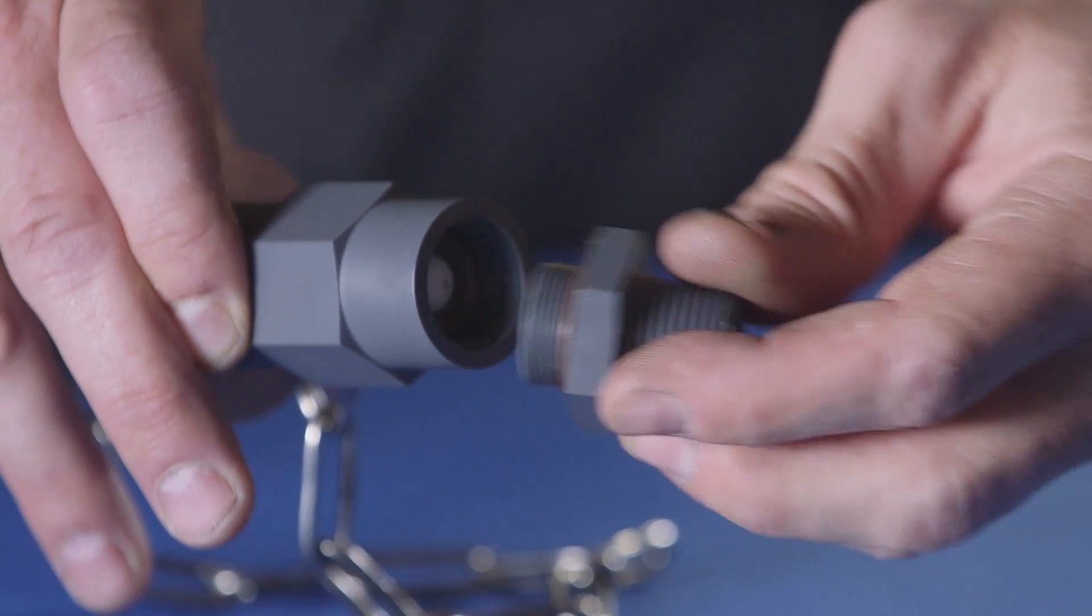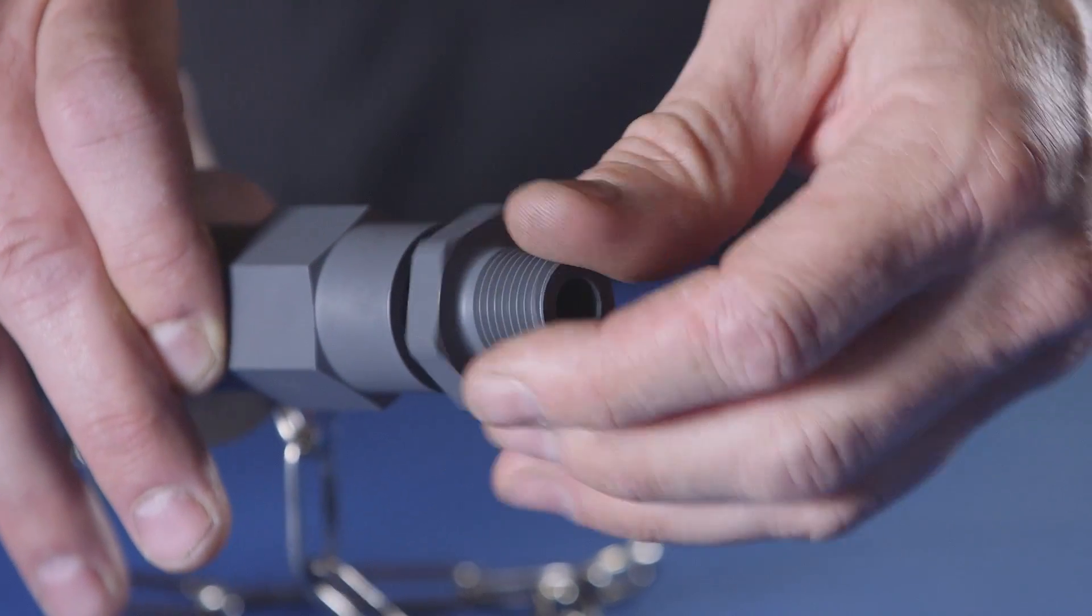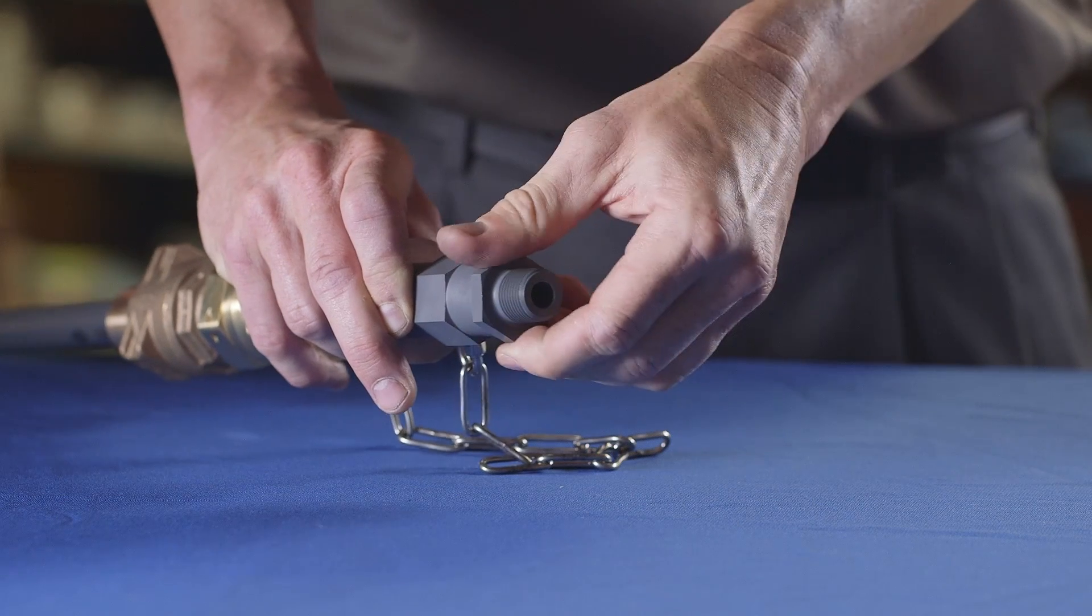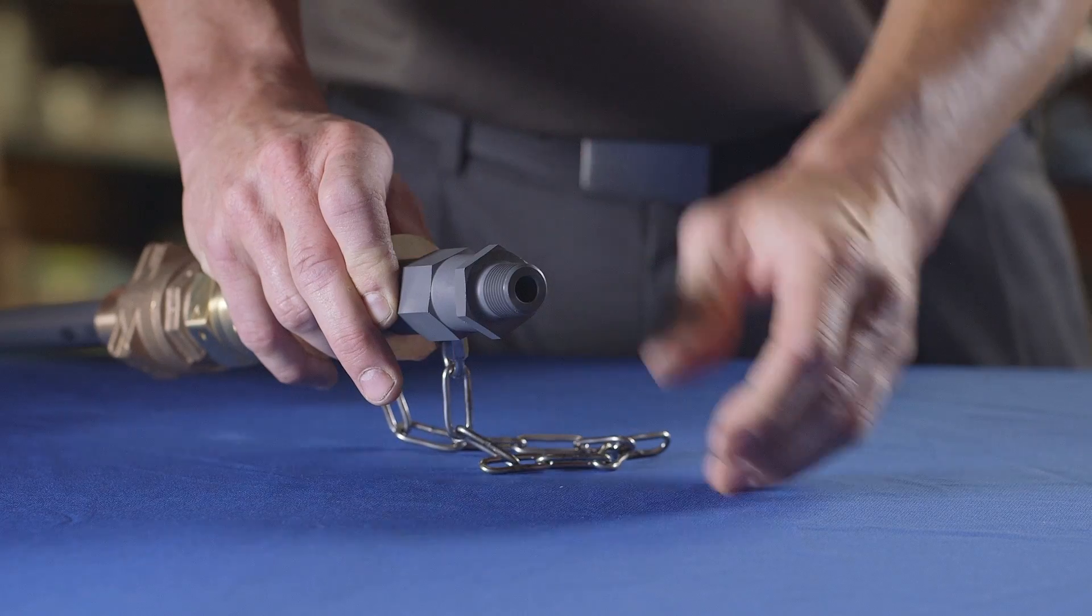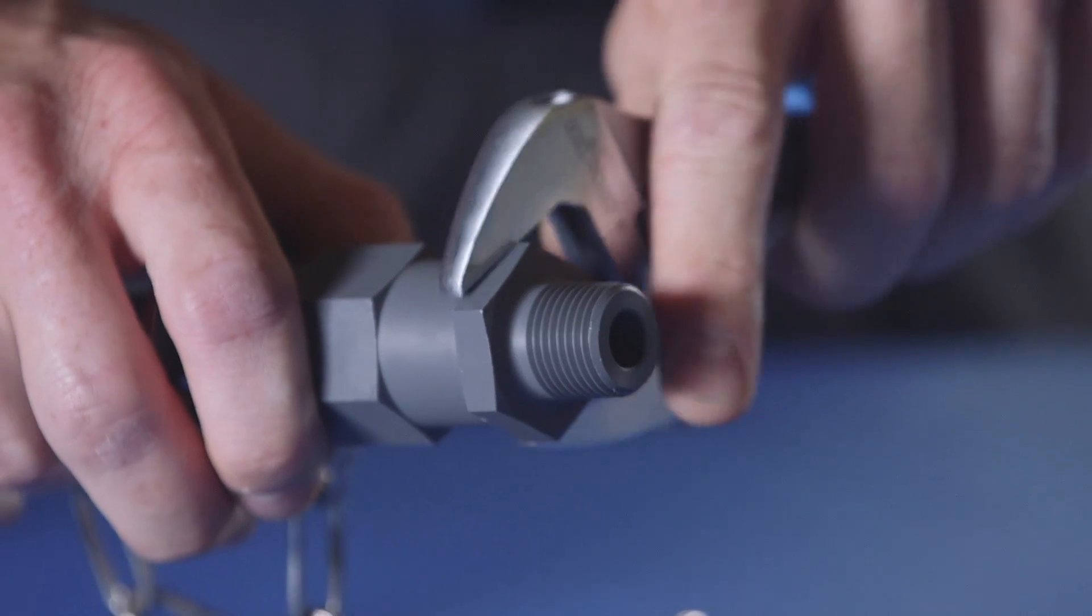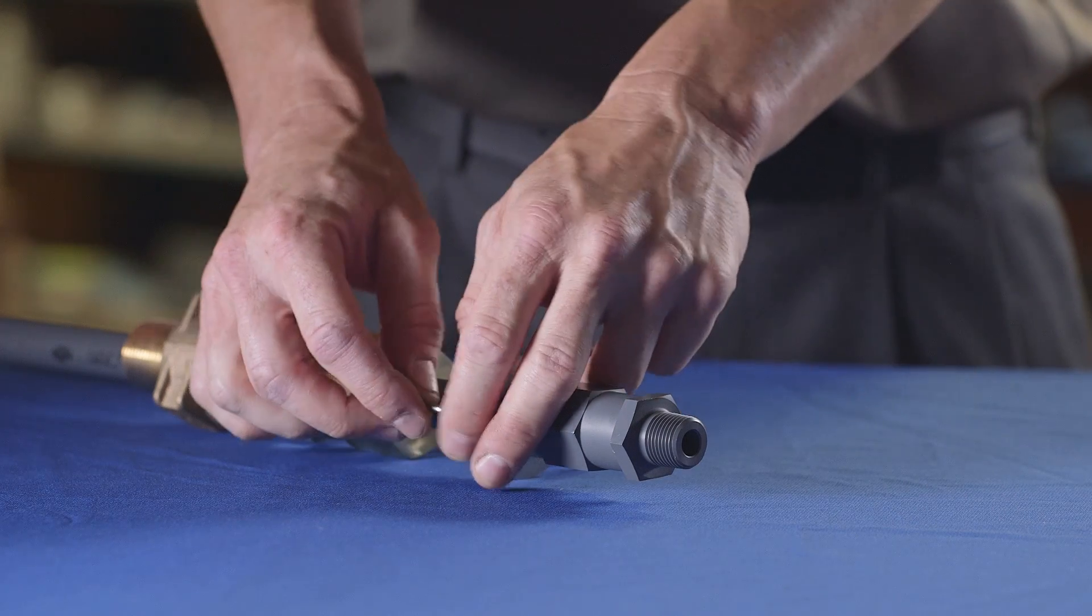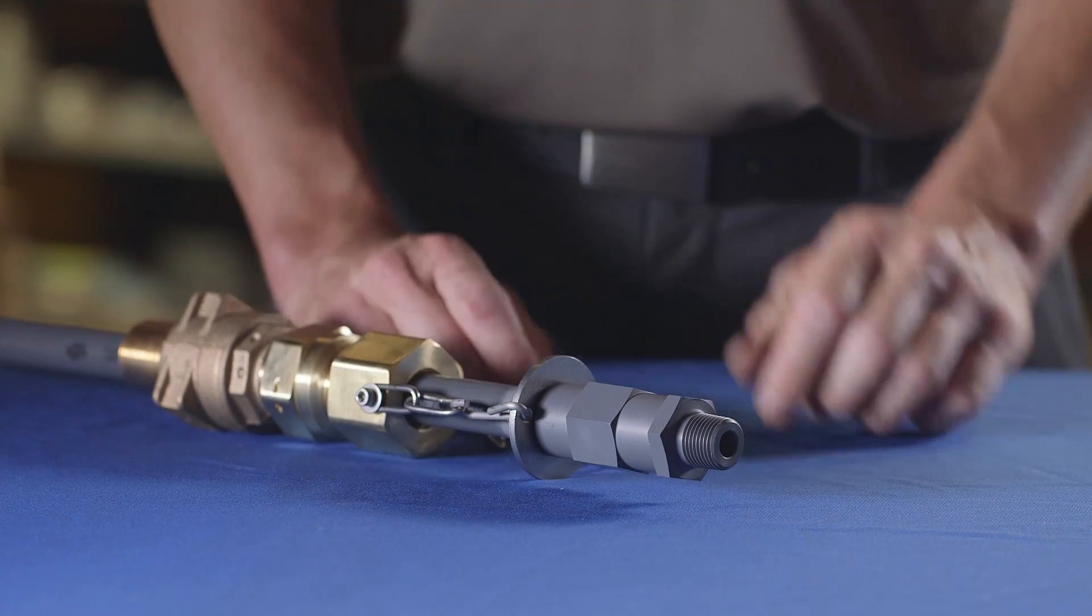Thread the upper housing into the lower housing until hand-tight. If a crescent wrench is used, it's important the housing is not over-tightened. The assembly is now ready to be returned to service.